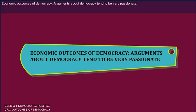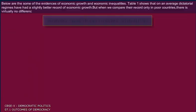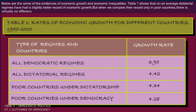Economic outcomes of democracy. Arguments about democracy tend to be very passionate. Over the years, many students of democracy have gathered careful evidence to see what is the relationship of democracy with economic growth and economic inequalities. Table 1 shows that on an average, dictatorial regimes have a slightly better record of economic growth. But when we compare their record only in poor countries, there is virtually no difference.